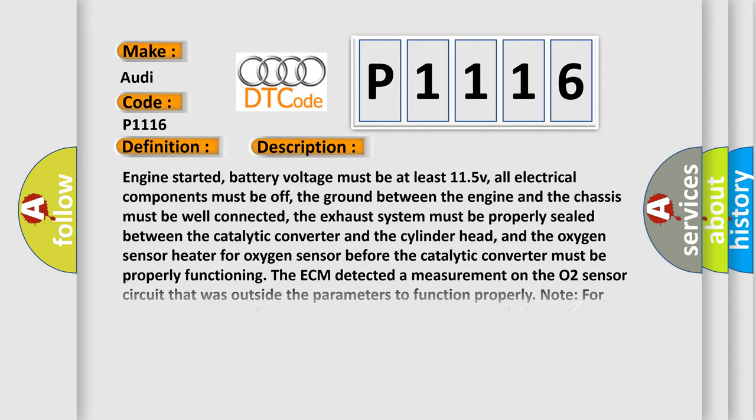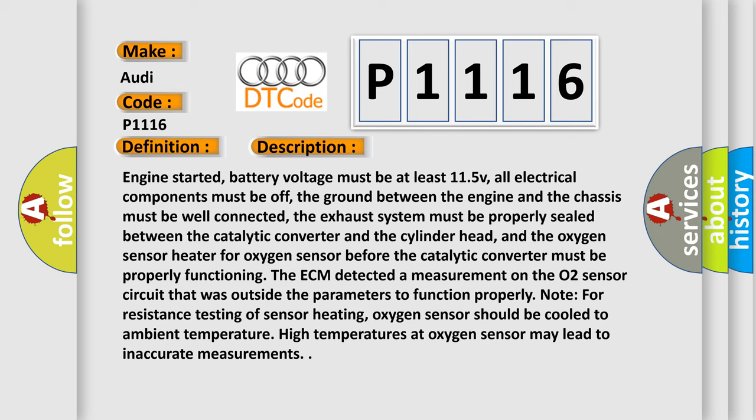Here is a short description of this DTC code. Engine started, battery voltage must be at least 11.5 V, all electrical components must be off, the ground between the engine and the chassis must be well connected, the exhaust system must be properly sealed between the catalytic converter and the cylinder head, and the oxygen sensor heater for the oxygen sensor before the catalytic converter must be properly functioning. The ECM detected a measurement on the O2 sensor circuit that was outside the parameters to function properly. Note for resistance testing of sensor heating: the oxygen sensor should be cooled to ambient temperature, as high temperatures at the oxygen sensor may lead to inaccurate measurements.